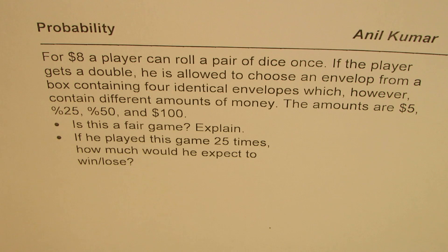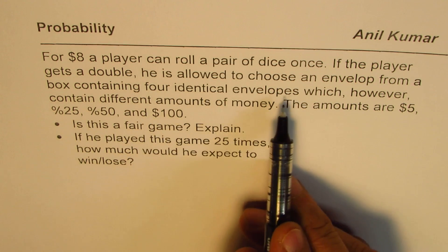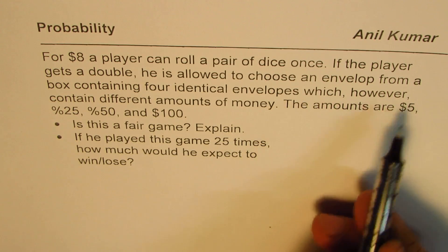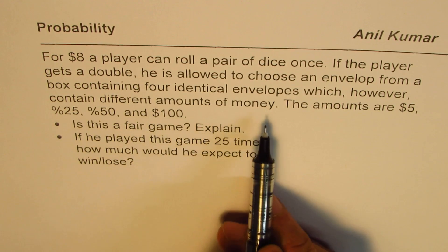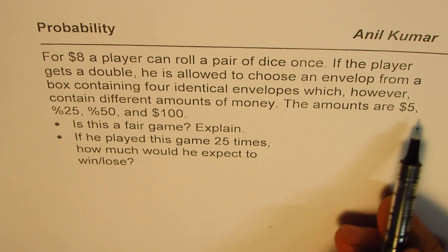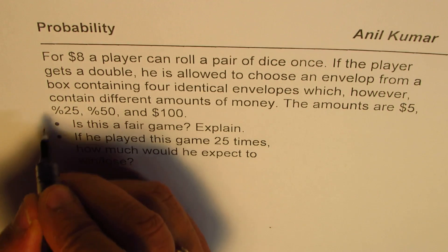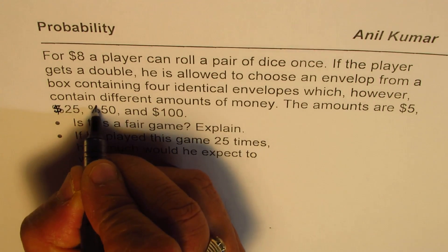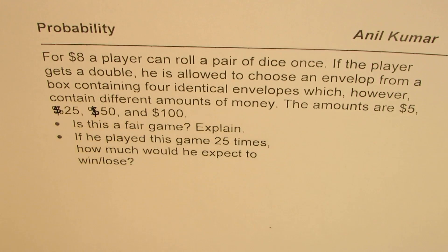If the player gets a double, he is allowed to choose an envelope from a box containing four identical envelopes which, however, contain different amounts of money. The amounts are $5, $25, $50, and $100.